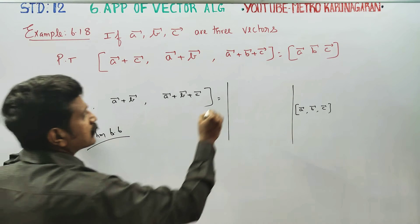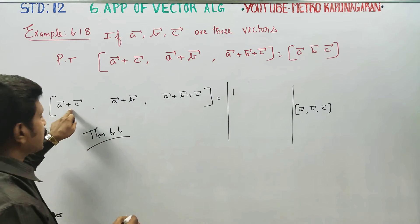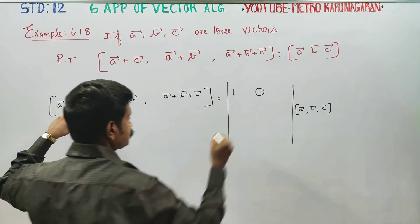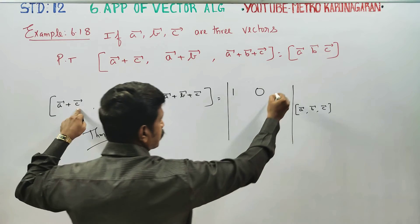A vector is the number 1. B vector is missing, that is 0. C vector is the number 1.